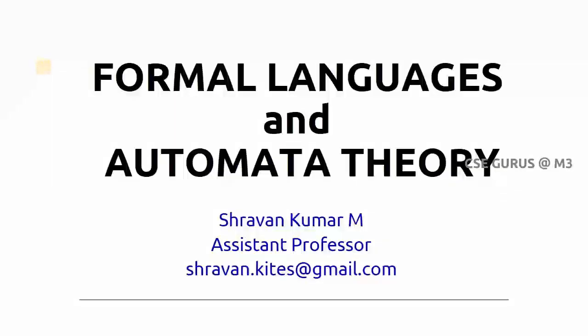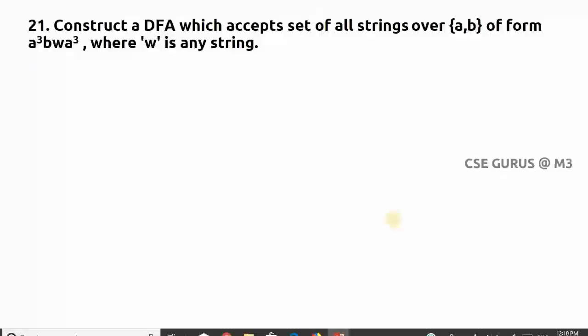Hi friends, welcome to the class of formal language and automata theory. Coming to question number 21: construct a DFA which accepts set of all strings over {a,b} of the form a³bw a³, where 'w' is any string.